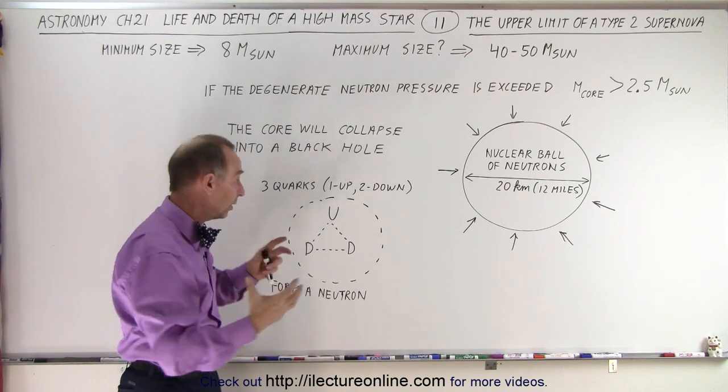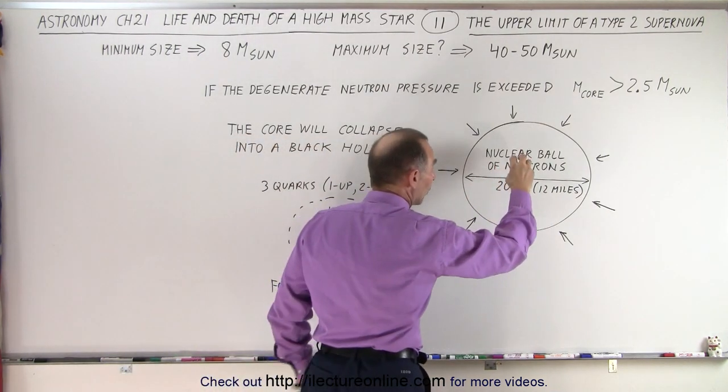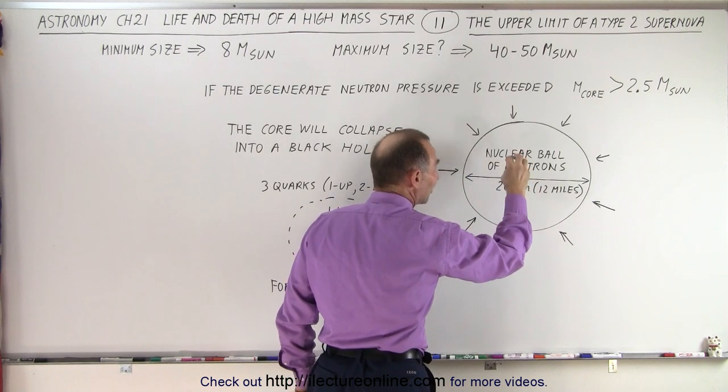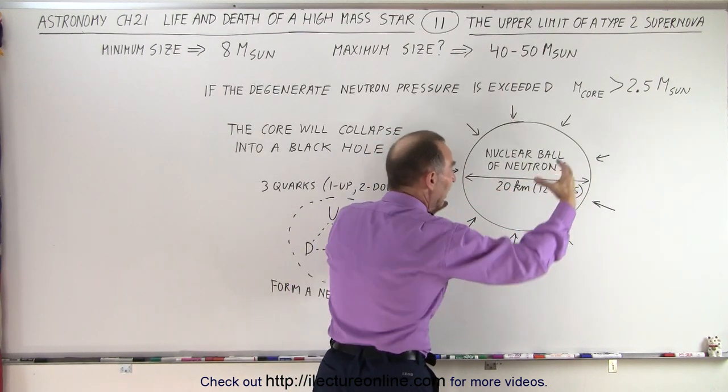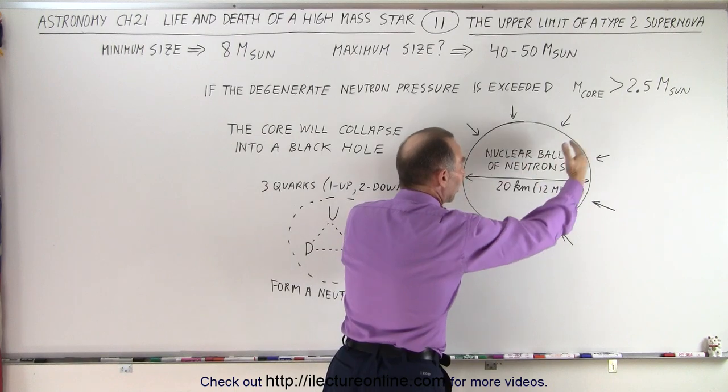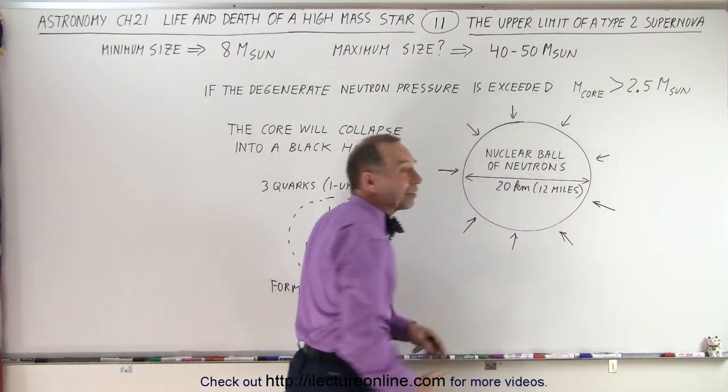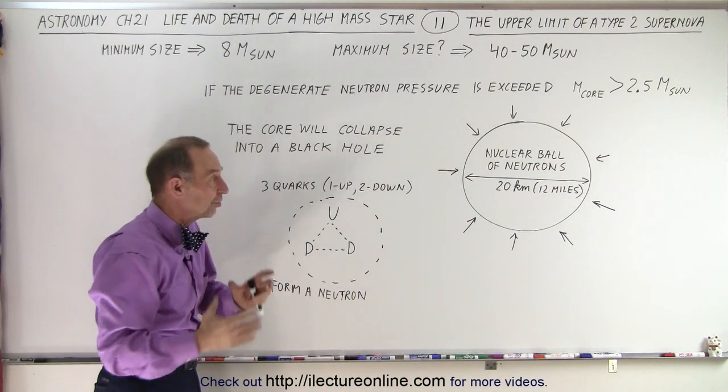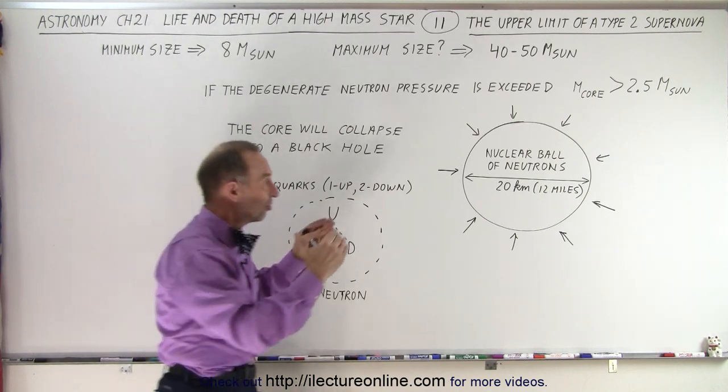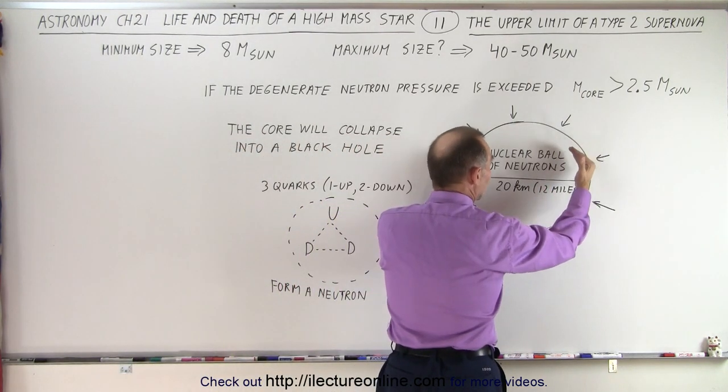So what happens? Well, once the quarks can no longer withstand that pressure and they begin to crumble in on each other and the whole thing begins to collapse in on itself, there's no stopping gravity at that point. Gravity at this point will simply become king, and the size of that core will continue to shrink in size until it's 15 kilometers across, and then 10 kilometers across, and 5 kilometers across, and 1 kilometer across.